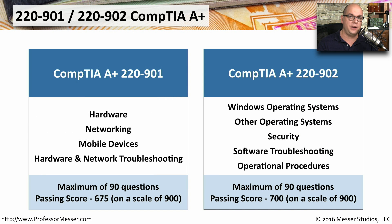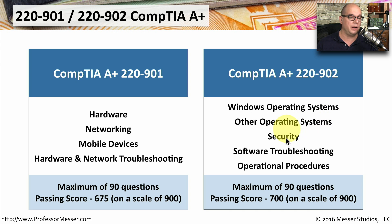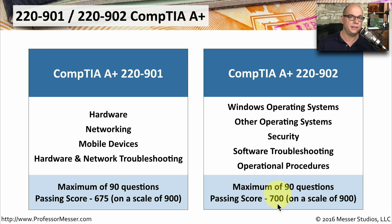To earn your A-plus certification, you have to pass two separate exams: the 220-901 and the 220-902. The 220-901 includes hardware, networking, mobile devices, and you'll be asked to troubleshoot all of the technologies you learned in those three sections. You may be asked a total of 90 questions, and you have to earn a 675 on a scale between 100 and 900. On the 220-902 exam, you'll need to know about Windows operating systems, Linux, and macOS. There are a number of security sections, and you'll need to troubleshoot software and operating systems as well. Again, you'll have a maximum of 90 questions, but the passing score is a little bit higher — you'll need a 700 on that same scale between 100 and 900 points.